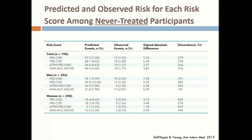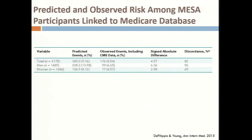To start tackling some of these problems, we took MESA and did a sensitivity analysis where we removed anyone who was taking aspirin or statin at any point during the 10-year follow-up, and that didn't help at all — results still showed massive overestimation of risk. We also looked for missing events by accessing CMS billing databases, and found only nine events potentially missed in MESA, so that didn't make a difference either.